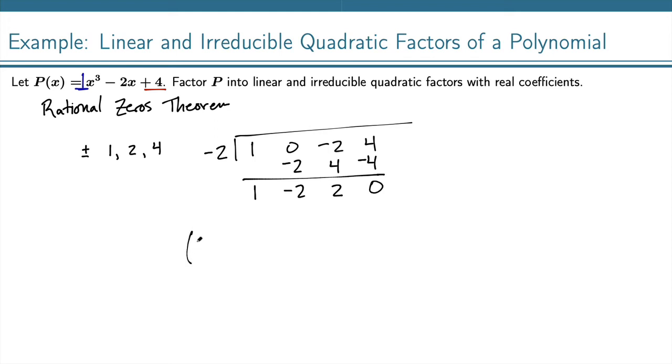And so now we're going to write this as (x + 2). That tells us that this zero gives us this factor. And then we're left with x squared minus 2x plus 2.